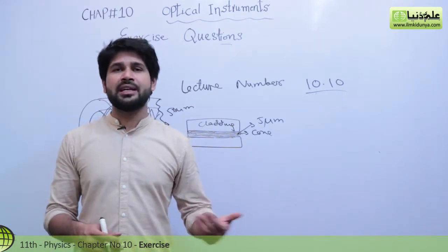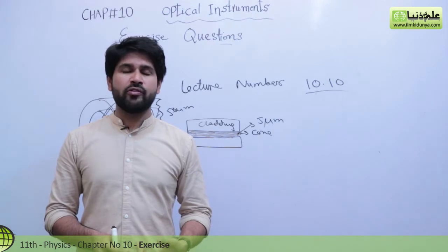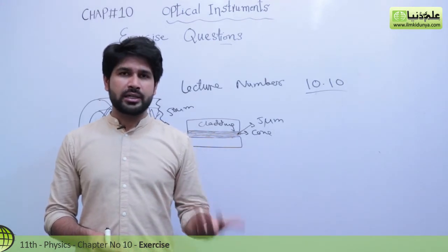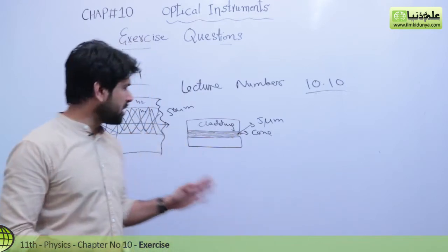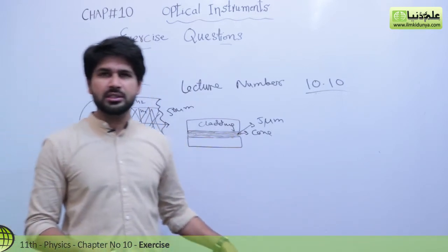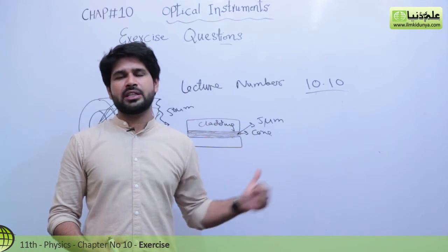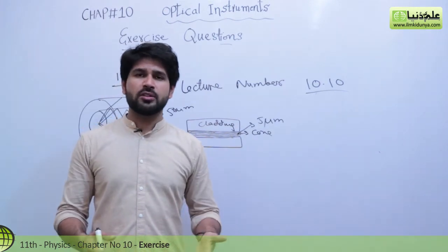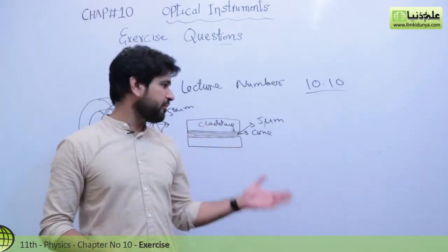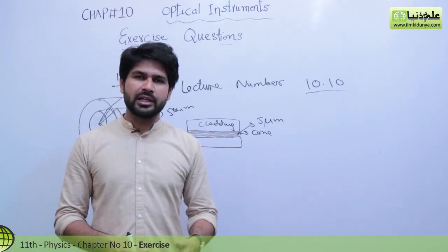We can send and receive 14 TV channels and 14,000 phone calls at a time. But in the case of multi mode, it is used for short distance because in multi mode index fiber the dispersion of the light is maximum. Therefore we prefer single mode index fiber.